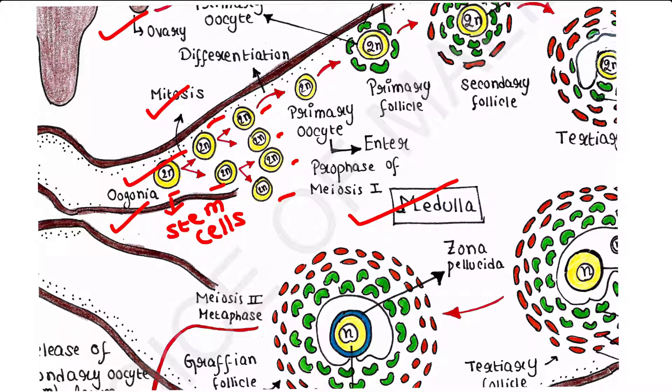Some of the oogonia undergo differentiation. Some of them undergo differentiation to produce primary oocytes. Differentiation means developmental changes. Developmental changes occur in some of the oogonia and they are called primary oocytes. Primary oocytes are also diploid like oogonia. They are also 2n.